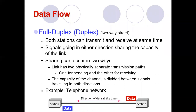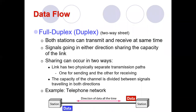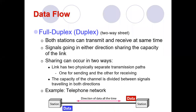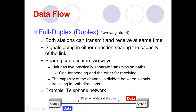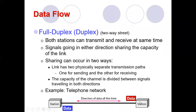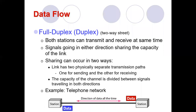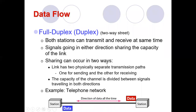Whatever capacity the channel has will be shared with both stations or nodes. For example, if the channel capacity is 4 Mbps, it will be distributed equally — each station gets 2 Mbps — so they can send and receive data simultaneously. Sharing can occur in two ways.